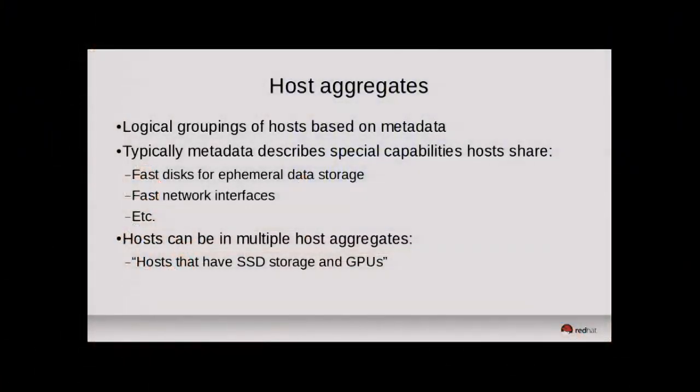Now I want to talk about host aggregates and availability zones. Host aggregates expose a logical grouping of hosts typically based on metadata describing some capability that all hosts share — fast disks for ephemeral storage, faster networking devices, GPUs, and so on that you can expose to guests. Hosts can be in multiple host aggregates. For example, I might have one aggregate for hosts with SSDs, another for fast network devices, with some overlap — some hosts in one group, some in another, and some in both.